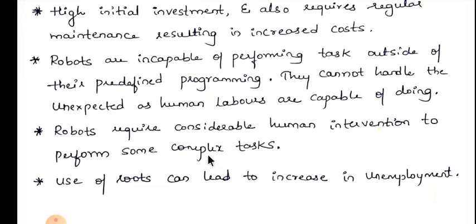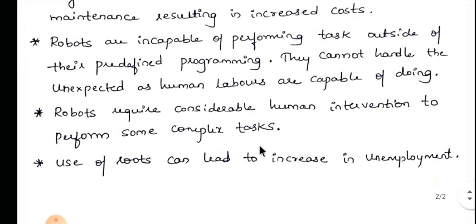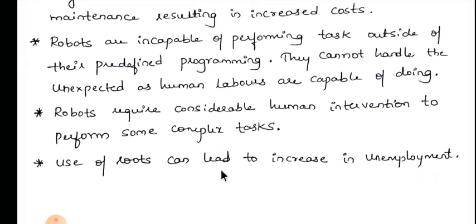Robots require considerable human intervention to perform some complex tasks. In some cases, human intervention is needed. The last and important limitation is that the use of robots can lead to increased unemployment. In all sectors, robots are replacing human beings — even in hotels, services once given by humans are now being replaced by robots, resulting in unemployment.